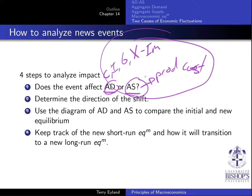Have confidence in your first two steps, and then let it be. From there, you're going to use the ADAS diagram to compare the initial and new equilibrium, keeping track of the new short-run equilibrium and deciding how we'll transition to a new long-run equilibrium. At this third step, you'll see what happens to the price level — will it go up or down? — and what happens to the quantity of output.